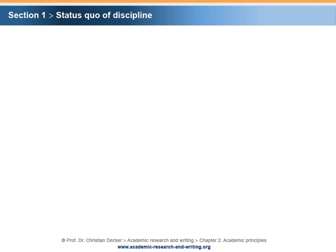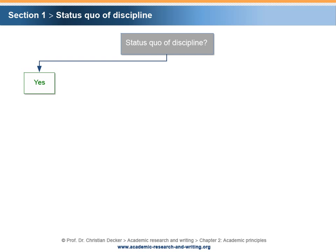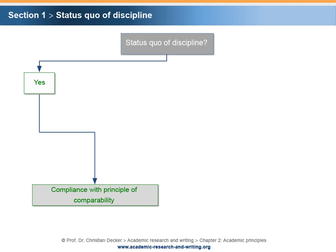The principle of comparability implies obeying the status quo of the relevant academic discipline. Only in very rare cases will groundbreaking theoretical findings be generated in the context of research projects. The theoretical foundation of academic research papers should be based as far as possible upon the status quo of the relevant discipline. If you apply the status quo of your discipline, you will comply with the principle of comparability.